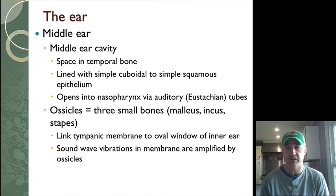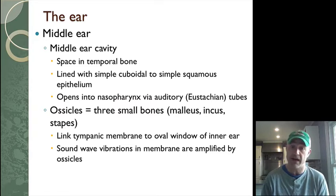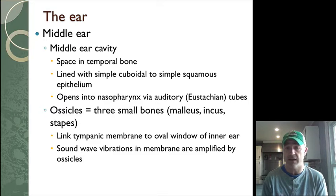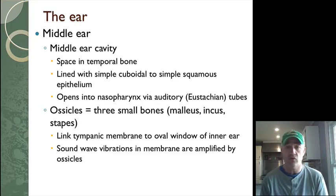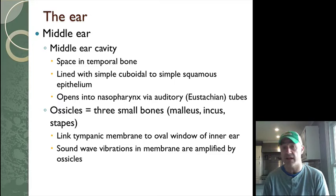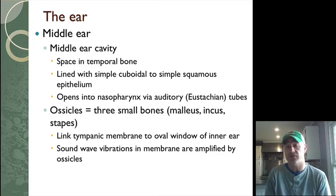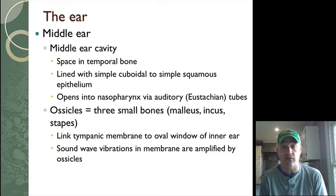In the middle ear we also find the three auditory ossicles, which are the smallest bones in the body. These take the vibrations from the tympanic membrane and transmit them to the cochlea, which houses the actual structures for the reception of sound.